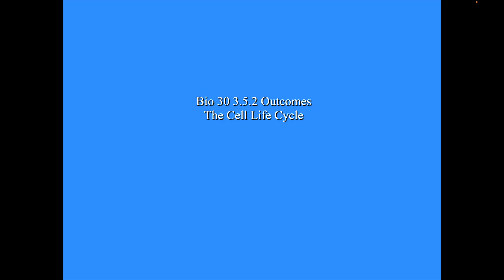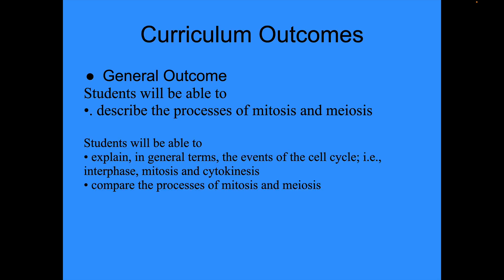Today we're going to be talking about the cell life cycle, specifically looking at mitosis, and this is in connection with Bio 30 lesson 3.5.2. The curriculum outcomes we're going to be looking at: the general outcome is that students will be able to describe the processes of mitosis and meiosis. More specifically, students will be able to explain in general terms the events of the cell cycle, such as interphase, mitosis, and cytokinesis, and compare the processes of mitosis and meiosis.